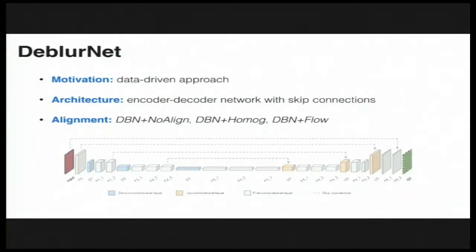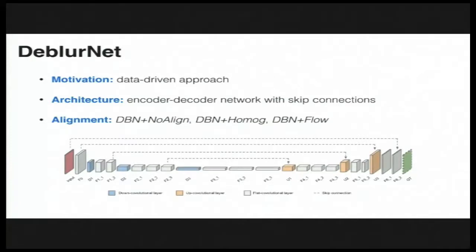The input to our network is a stack of five consecutive frames under different alignment configurations, and the output is the restored central frame. We show that we can generate good results in the presence of warping artifacts, as well as when aligned with homography or even without any alignment.